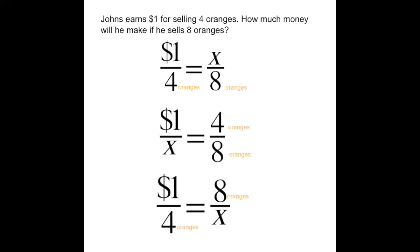How we do that is we cross multiply the two values we have. In this case, it would be the one dollar times the eight, and one times eight is equal to eight. Then we would divide by the only value that's left.